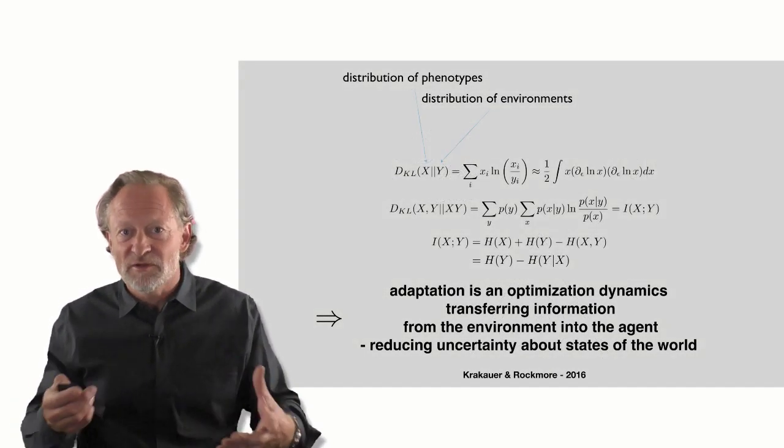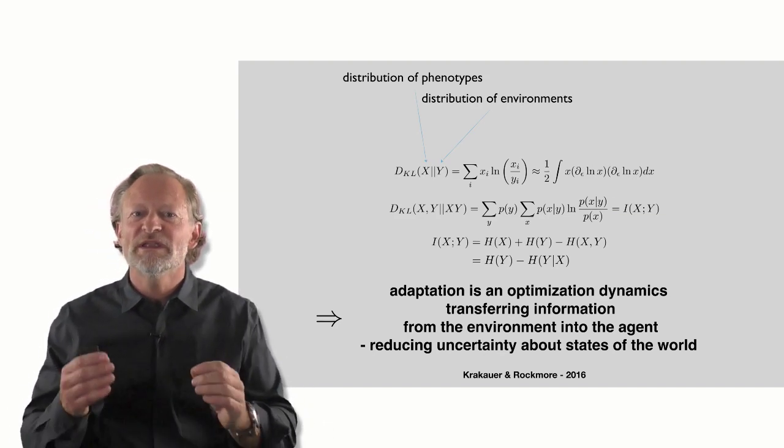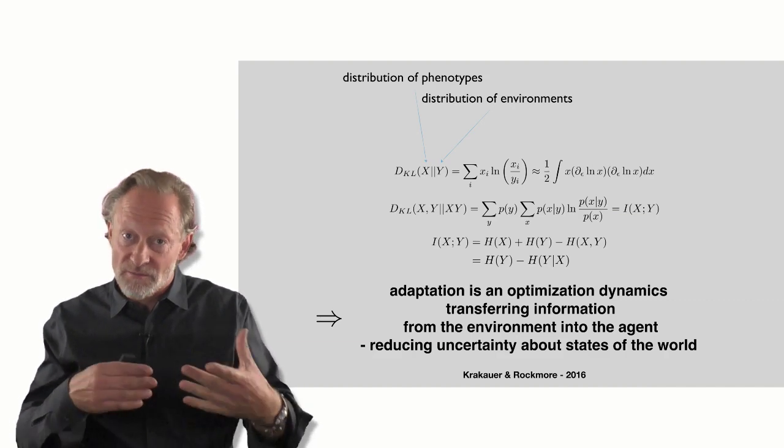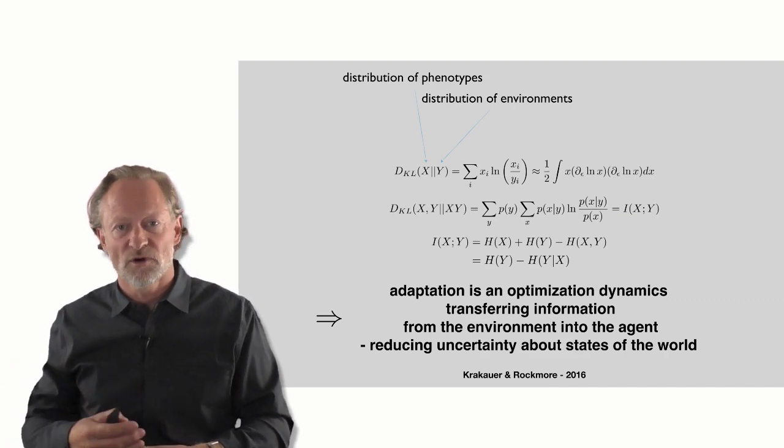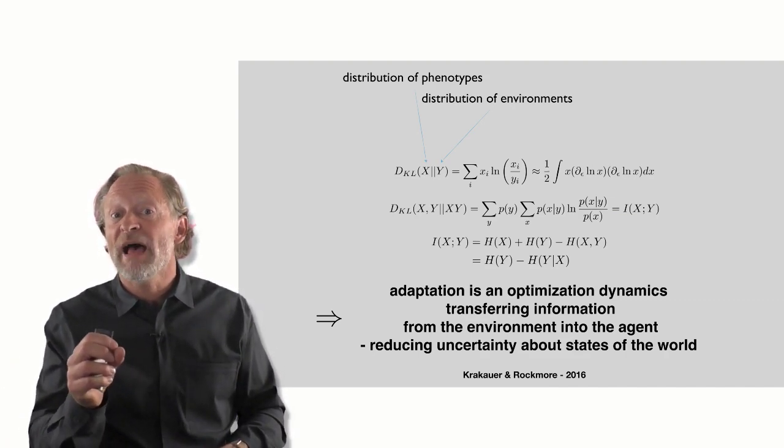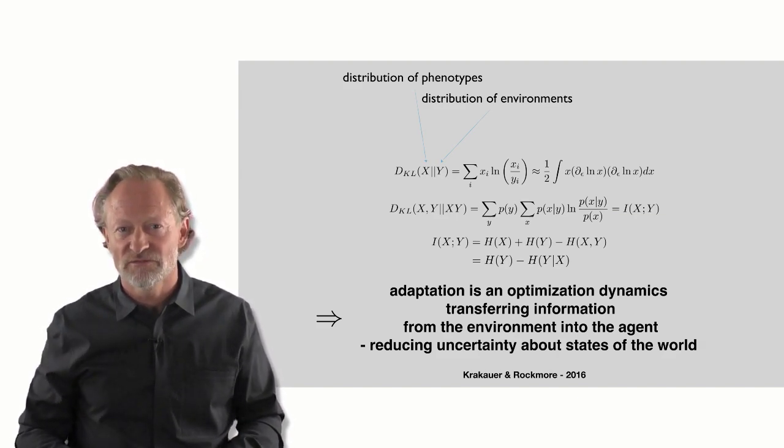And here's a little bit of mathematics, but we can jump straight to the text. What we now know all adaptive processes are minimizing is they're minimizing the uncertainty of an agent about the state of the world. Or put differently, each agent maximizes the amount of information it possesses about the world in which it lives.